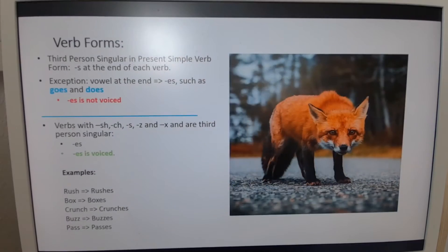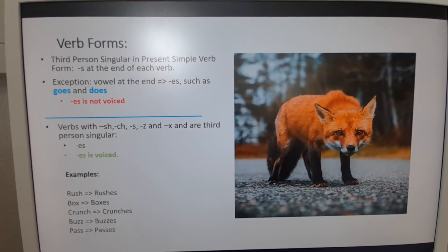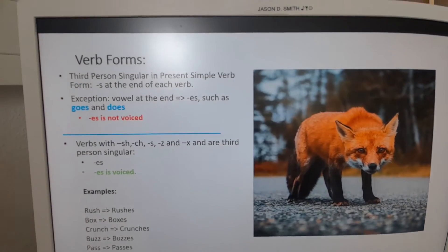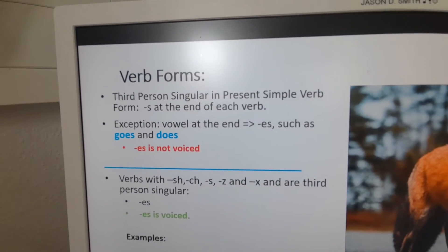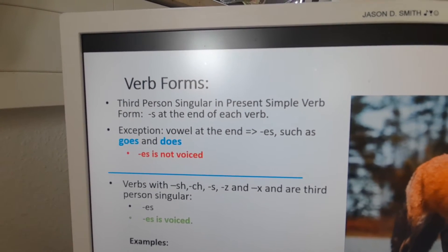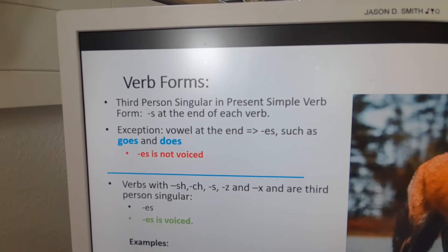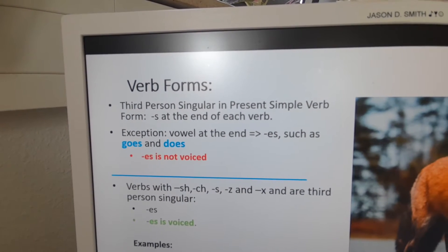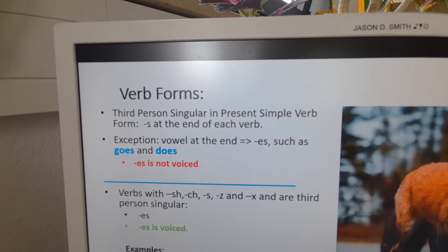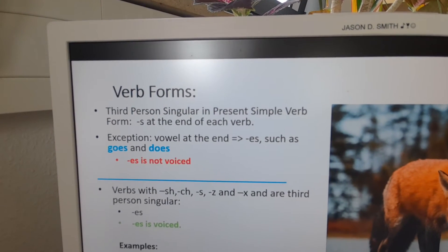It's a bit different when we talk about verbs. As a general rule, when we have a third person singular — he, she, it — the S always comes with. However, there are a couple of exceptions. The first exception is when you have a verb that has an O at the end; then as a third person singular, you use E-S at the end. For example, go — the third person singular form is goes. Do — it's does. In these two cases, we do not voice the E-S; we just follow the rules as he, she, and the S comes with.